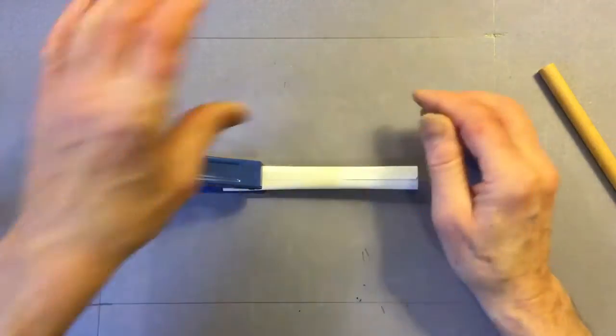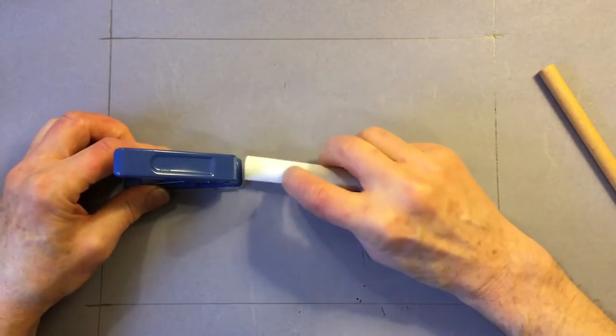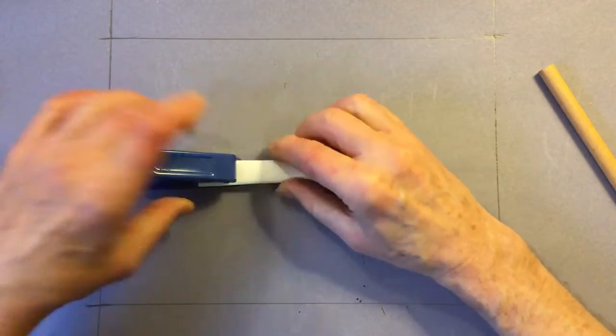So just check you're all lined up. One quick punch. Take it out and there's our punched tube. Next one goes straight in all the way into the punch.